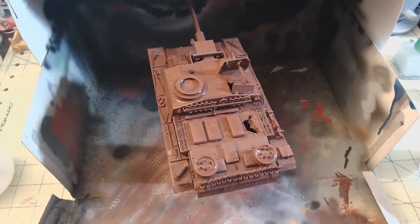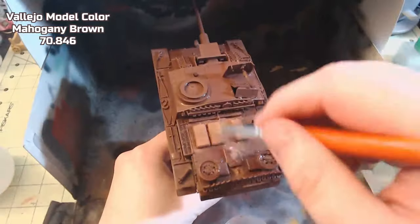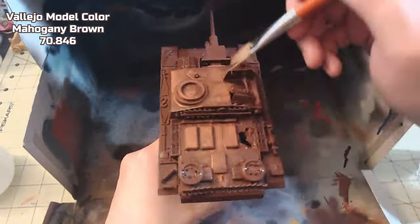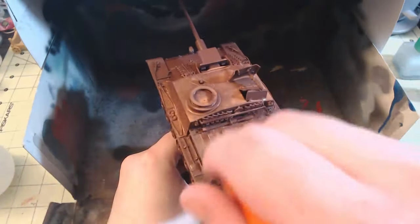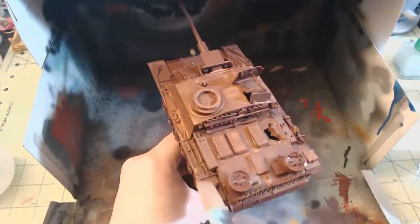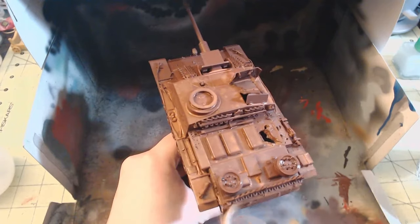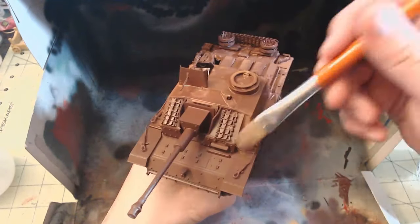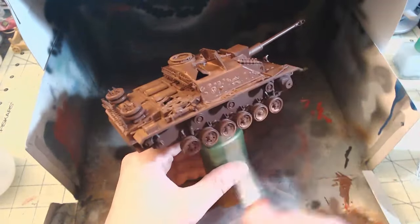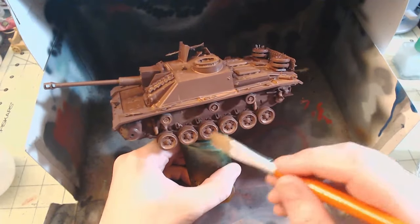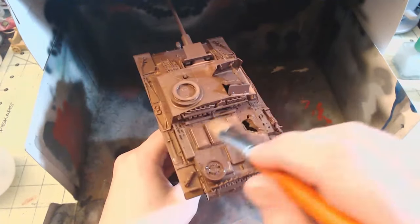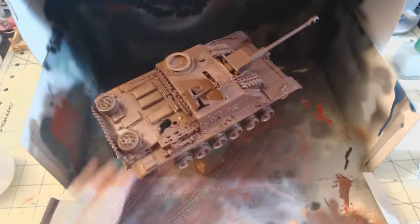Once this first coat dried, I heavily thinned with water some Model Color Mahogany Brown 70.846, adding a splash of airbrush thinner to improve flow. A spray bottle was used to wet the model and then I applied the wash with a wide flat brush. The water aids in a more natural flow for the wash, mimicking rust developments over time from the elements. The wash was primarily applied to the places where the fire damage would be prominent. Since some of the original paint job would remain, I didn't worry about adding it to the front of the kit, for example.